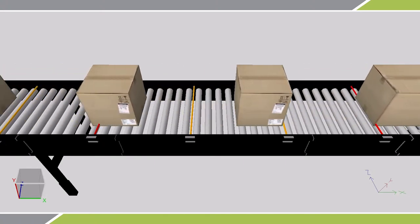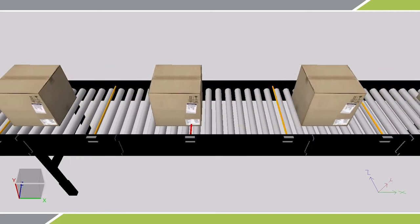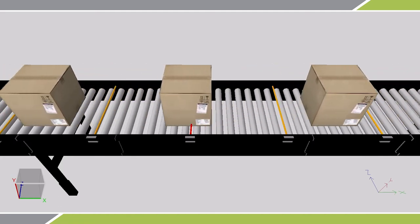When product flags two zone photo eyes simultaneously, the drive cards keep both motors turning in order to move the long box through the system smoothly and with zero pressure.